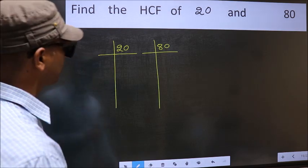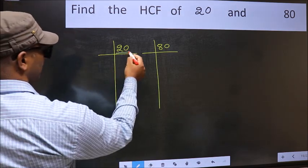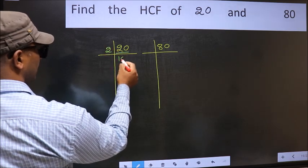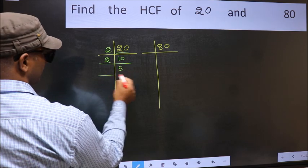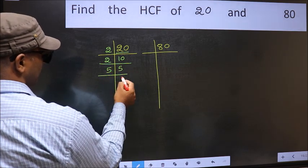Next. Now here we have 20. 20 is 2 tens, 20. Now 10 is 2 fives, 10. 5 is a prime number, so 5 ones is 5.